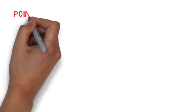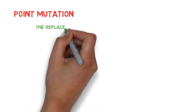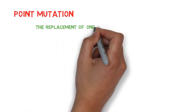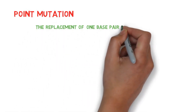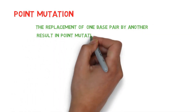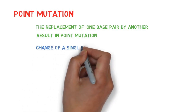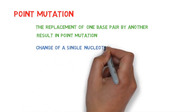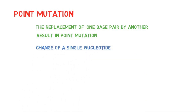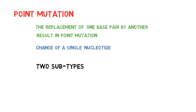Now we see the first type: point mutation. The replacement of one base pair by another results in point mutation, in which we see changes of a single nucleotide. Point mutation has two subtypes.